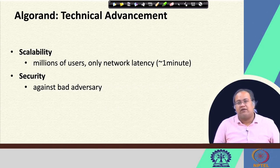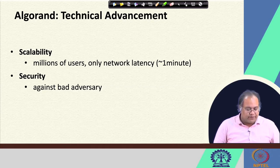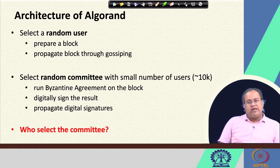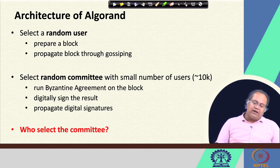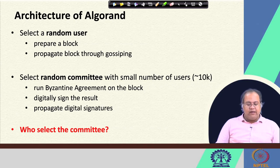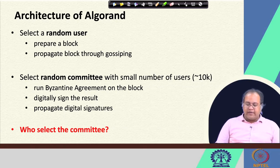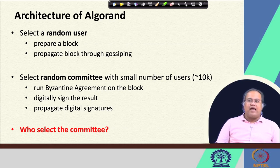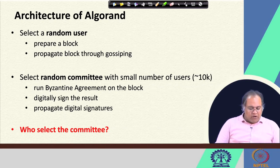The question remains: what magic does Algorand do to scale up the Byzantine agreement protocol? If you look at the architecture of Algorand, it is fairly simple. First, you select a random user who will prepare a block and propagate it through gossiping. While the random user is preparing and propagating the block, you need to ensure that the proposed block is a valid block — so the question is: who is going to validate that block?